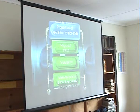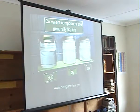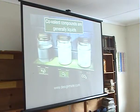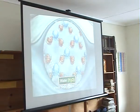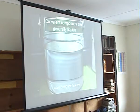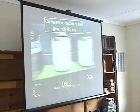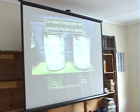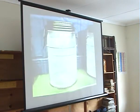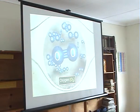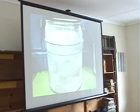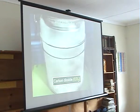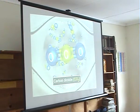Properties of covalent compounds. Physical state: Covalent compounds are generally liquids — for example, water (H2O) — or gases at room temperature, for example oxygen (O2), carbon dioxide (CO2), etc.